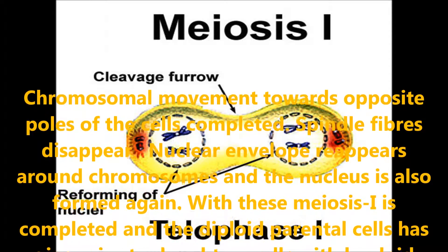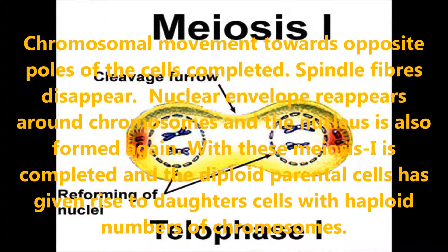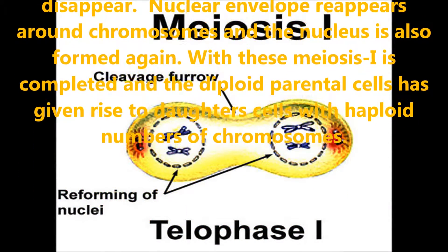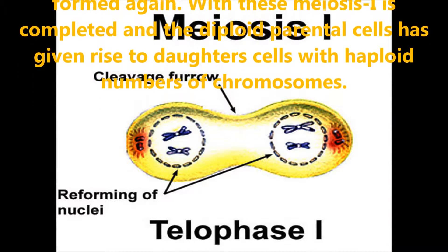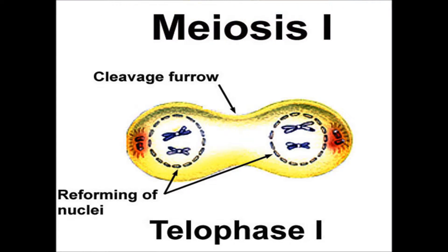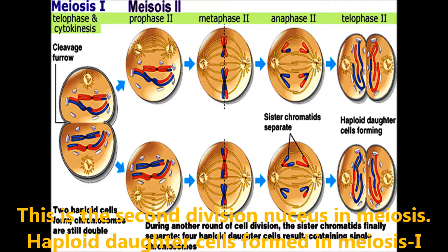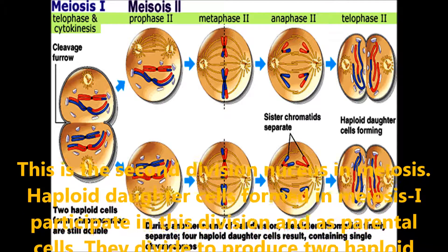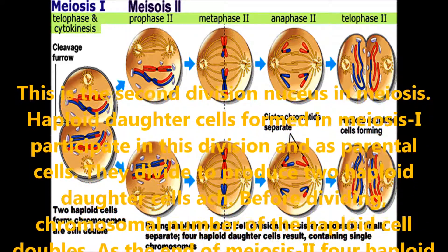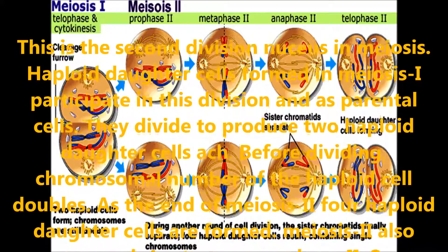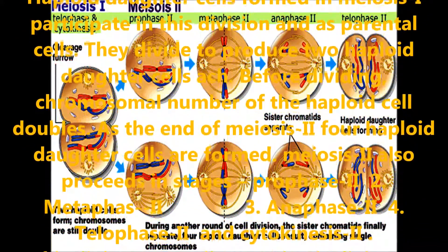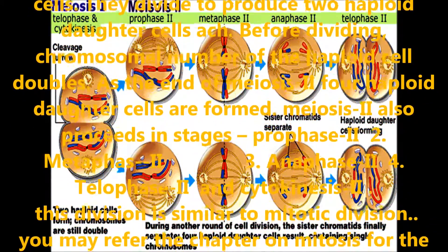Spindle fibers completely disappear. The nuclear envelope reappears around the chromosomes and the nucleus is also formed again. With this, meiosis 1 is completed and the diploid parental cell has given rise to daughter cells with the haploid number of chromosomes. In meiosis 2, the haploid daughter cells formed in meiosis 1 participate as parental cells. They divide to produce two haploid daughter cells. Before dividing, the chromosomal number of the haploid cells is doubled. At the end of meiosis 2, four haploid daughter cells are formed.